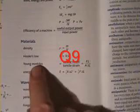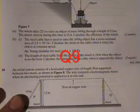And we've already worked out the stress, we know the Young's modulus, so we can use that formula to find the strain. So stress divided by Young's modulus will give us the strain.